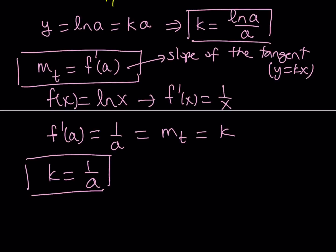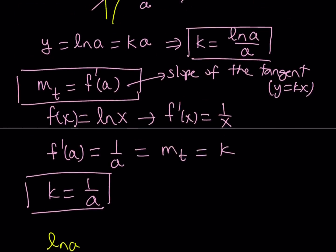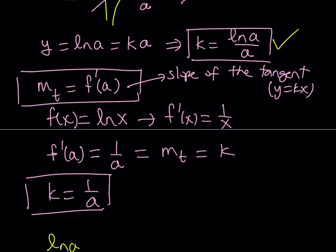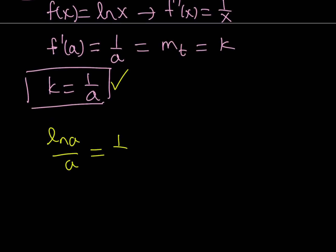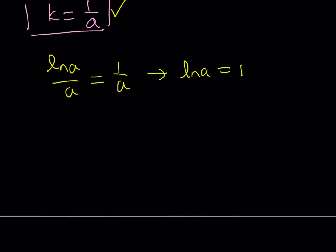Since we're talking about the same k, they're equal to each other. Let's set them equal to each other. So ln a over a equals 1 over a. From here, we get ln a equals 1. If ln a equals 1, then since we're talking about the base e here, ln means natural logarithm, so a is going to be e.